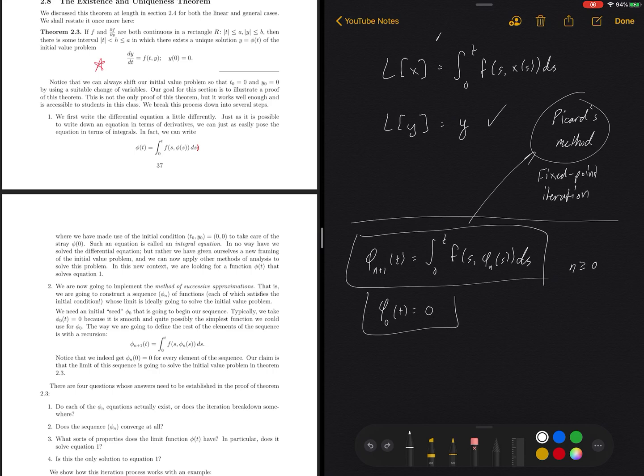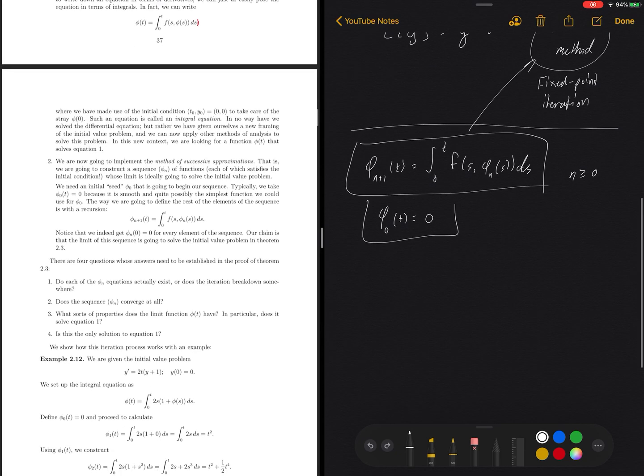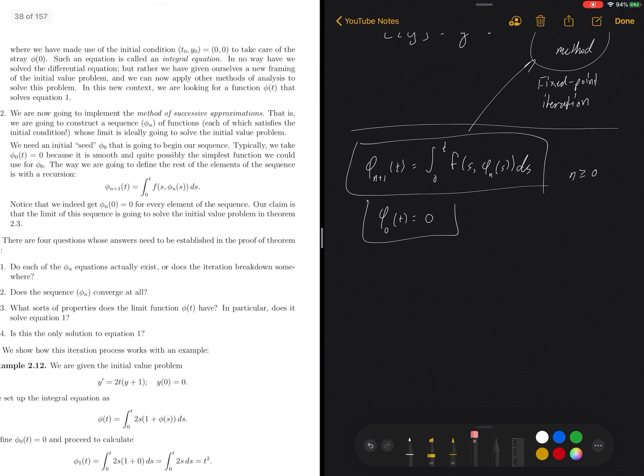Specifically, of this initial value problem. And that would be the way to prove the existence and uniqueness theorem—that there is some limiting function out there that satisfies the initial condition and is smooth enough so we can differentiate it.